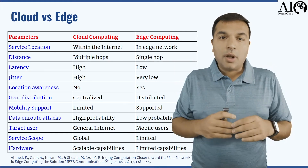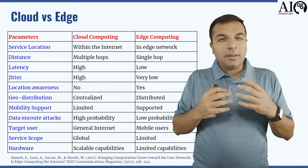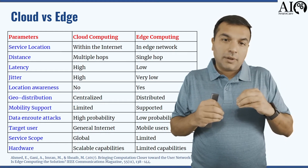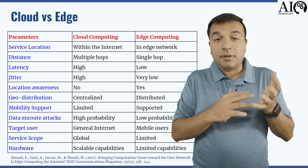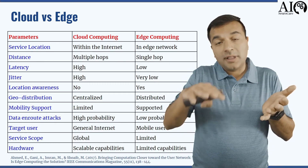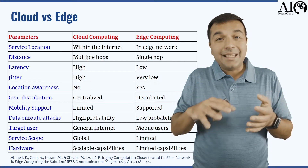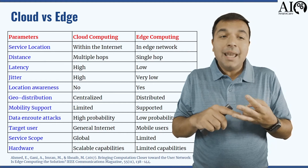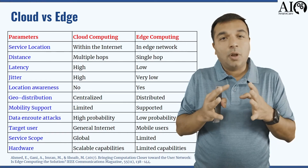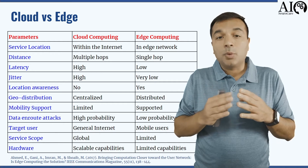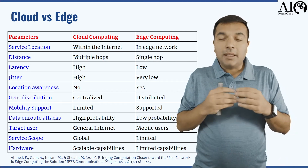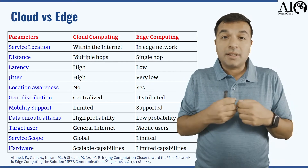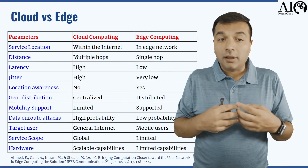There's a huge difference shown in this chart. The service location for the device is directly in the edge network — directly on the device or within the router or the specific location — so the data doesn't leave the facility. It is a single hop, therefore there's decreased latency. The jitter is very low, which refers to loss of data bouncing between two different devices. This is extremely important, especially in devices like robotic surgery, where you need low latency and low jitter.